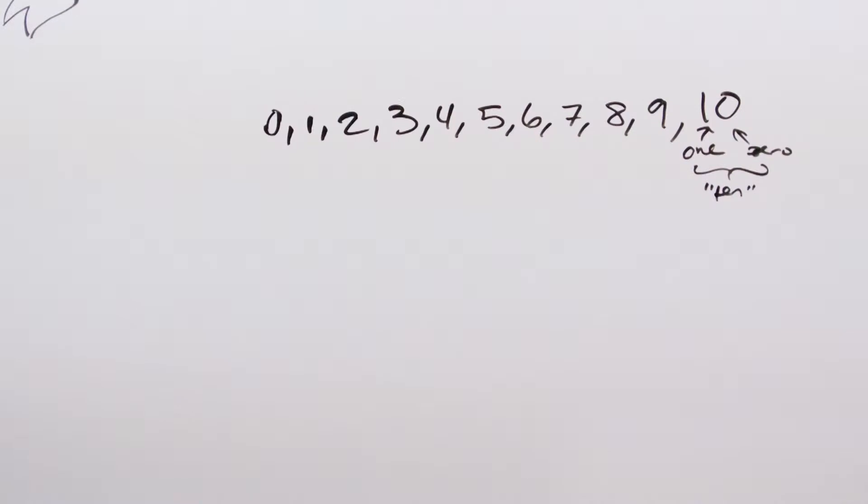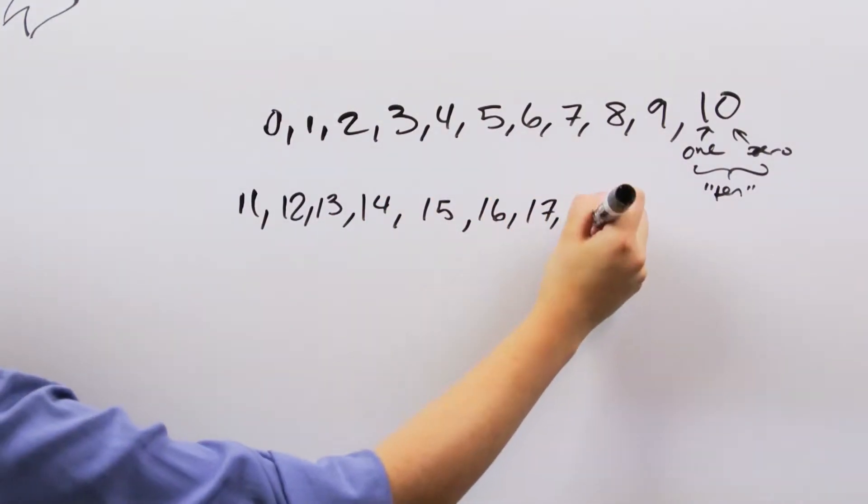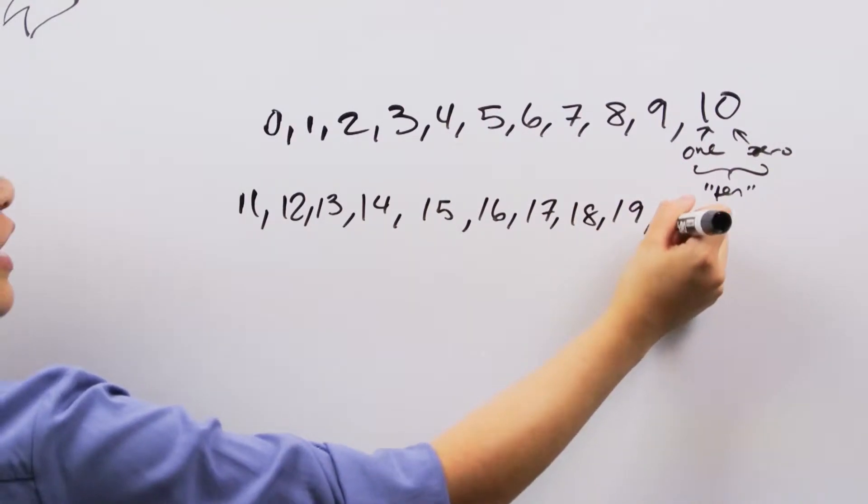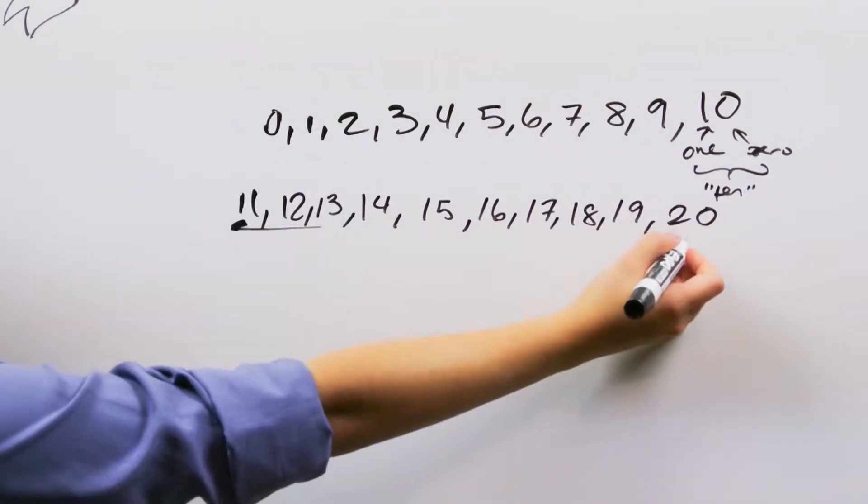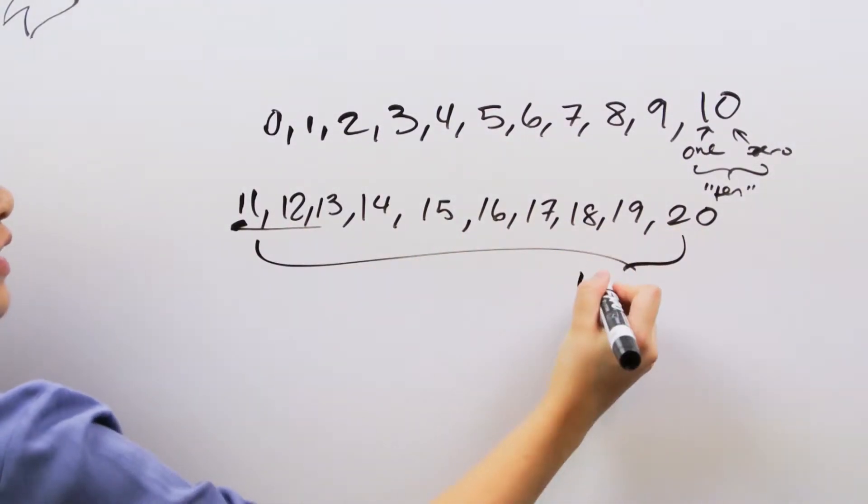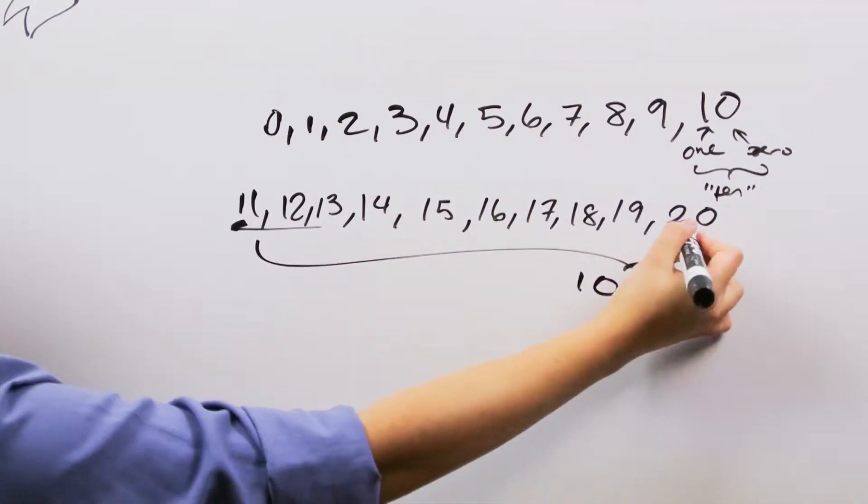Now, if we were to continue counting, 11, 12, 13, 14, 15, 16, 17, 18, 19, 20, you might notice that it's only this number over here that changes when we move up another 10. Notice that to get to 20, and then only then does it go from being a one to being a two.